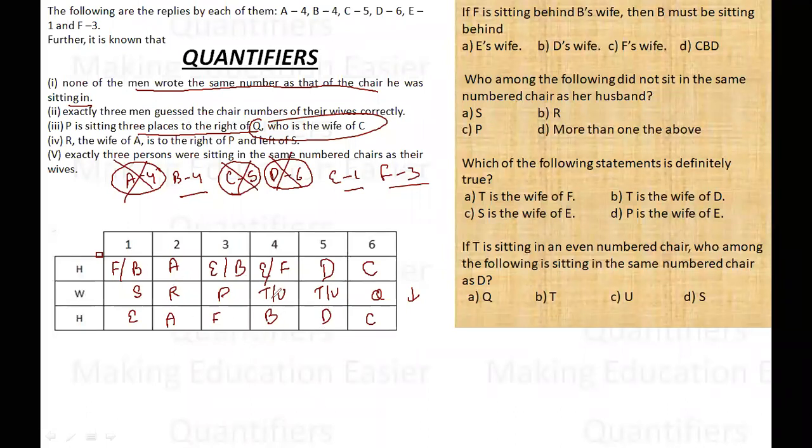E has guessed correctly which means that he is not sitting here. Since he is not sitting here, he can either sit at third place or he can sit at fourth place. Similarly F cannot sit here, so F can either sit here or F can either sit here, so there are two possibilities. Similarly B has guessed wrong, so B is either here or B is here. So all in all this completes my area. Let's move to the questions. If F is sitting behind B's wife, so this is B. If F is here, then F cannot be here because there are two possibilities for F. If F is here, F cannot be here, then B must be sitting behind his wife. So the answer to the first question is A. Who among the following did not sit on the same number chair as her husband? S did not sit behind her husband, R sat behind her husband, so it is correct. P does not. So there are two people who do not sit behind their husband. So the answer to this question is D option.